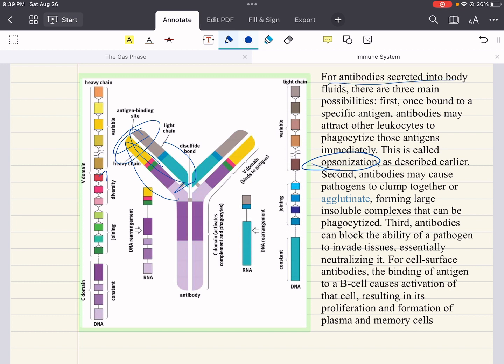For antibodies secreted into body fluids, there are three main possibilities. First, once bound to a specific antigen, antibodies may attract other leukocytes to phagocytize these antigens immediately. This is called opsonization. Second, antibodies may cause pathogens to clump together or agglutinate, forming large insoluble complexes that can be phagocytized. This is called agglutination.